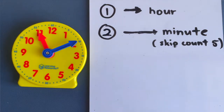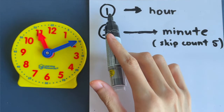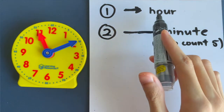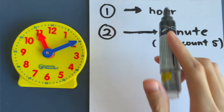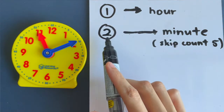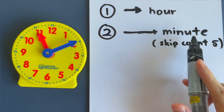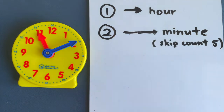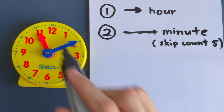Now let me teach you two steps to tell the time. First step: you look at the hour hand. Second step: you look at where the minute hand is.